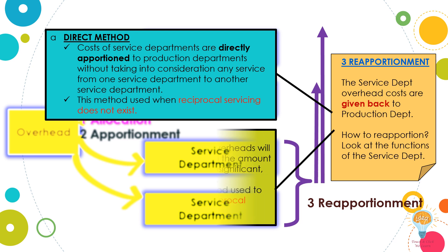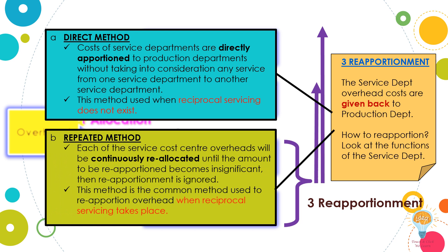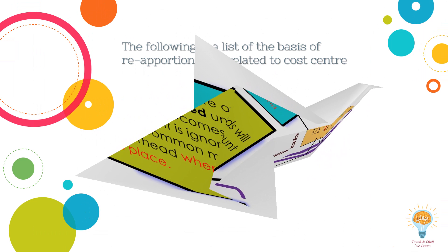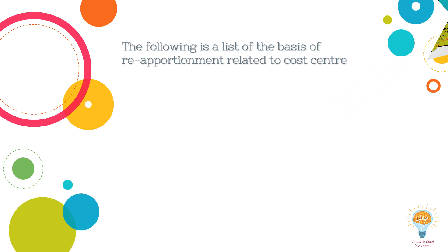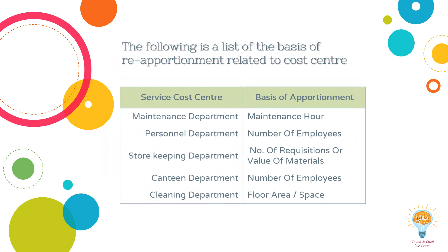Under the repeated distribution method, each of the service cost center overheads will be continuously reallocated until the amount to be reapportioned becomes insignificant, then reapportionment is ignored. The following is a list of the basis of reapportionment related to each cost center.